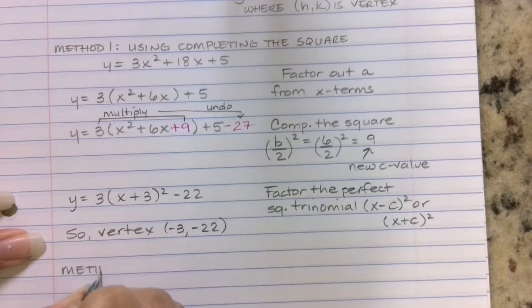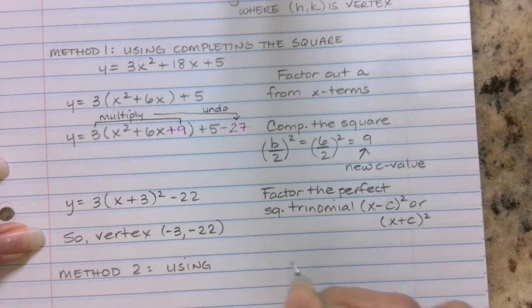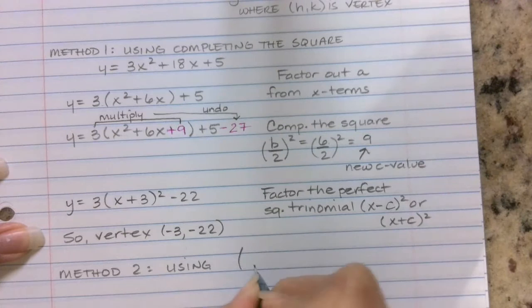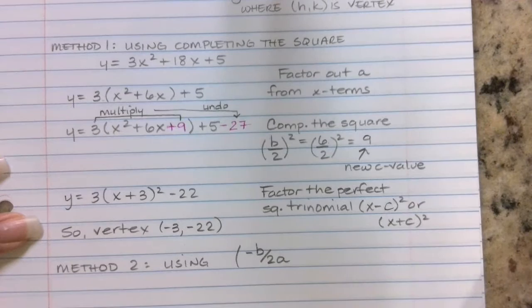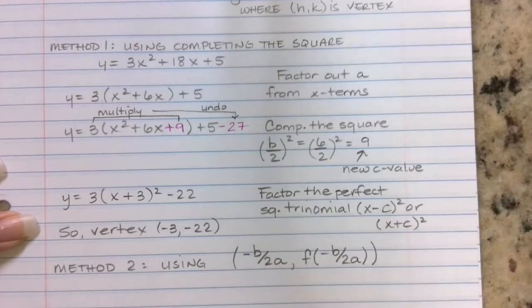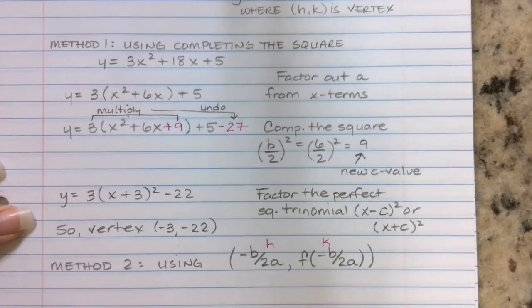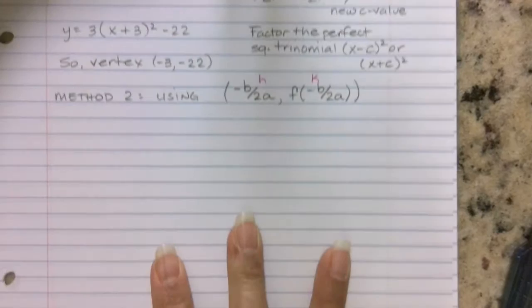Here's method number 2. So let's write here method 2. And here, instead of completing the square, we're going to be using the equation for vertex, which is -b/2a, our axis of symmetry equation, and then whatever our function is, we will substitute that value we obtain from the axis of symmetry equation to obtain our y. So this would be the h of our vertex, and this will end up being the k of our vertex.